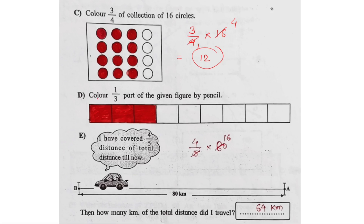This is: color 1 by 3 part of the given figure by pencil. The total is 9. So 9 divided by 3 is 1 by 3. You color one-third, which is 3 parts out of 9.